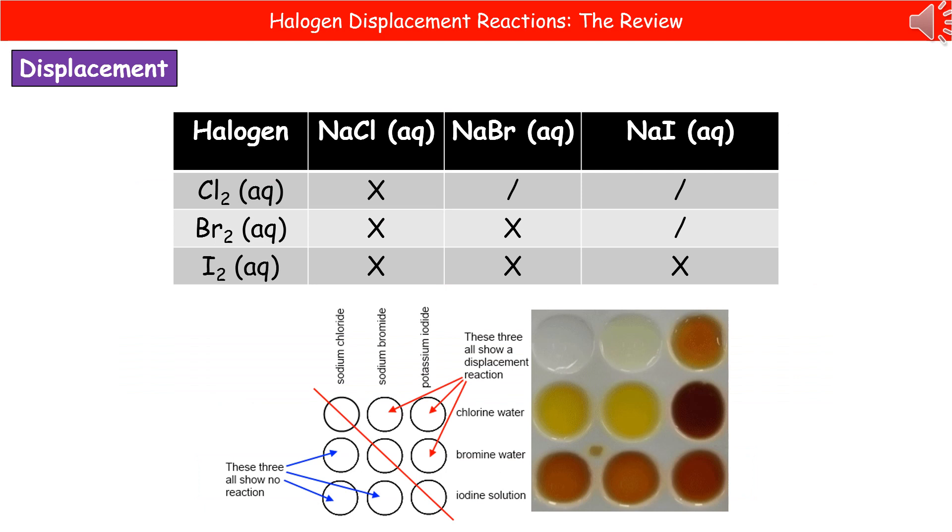So in class, you should have done this little reaction where you've got your spotting tile, and in there you've got a solution of sodium chloride, one of sodium bromide, and another of potassium iodide. So you've got those three little spots in your spotting tile with each of those solutions in there. Then we add some chlorine water to one row, bromine water to another, and the iodine solution to the last row.